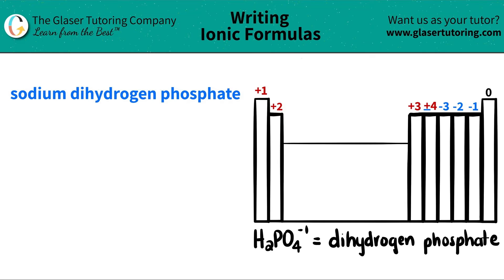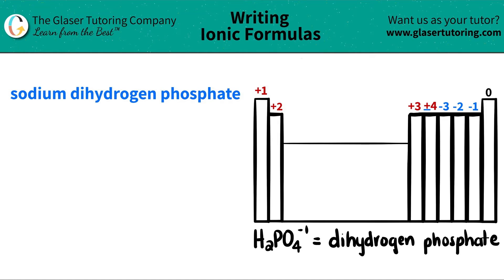Today we are going to be writing the formula for the ionic compound sodium dihydrogen phosphate. So let's work from left to right. The first thing I see is sodium. Now sodium is on the periodic table and sodium is right here. Sodium is listed as Na. So I will write Na — that's the element sodium. And since sodium is in group one, it always is going to have the oxidation state or charge of plus one.